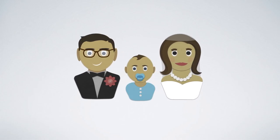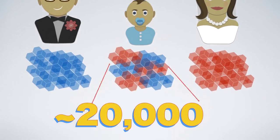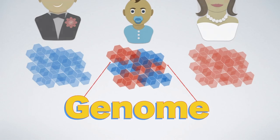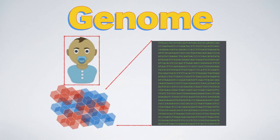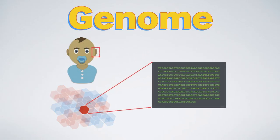When your parents made you, they created a random mix of their genes. Around 20,000 distinct genes make up your entire genome — a complete recipe which describes all of you. Each gene is a puzzle piece of that genome, a self-contained snippet of code which describes a certain small part of you. The programming language this code is written in is called DNA.